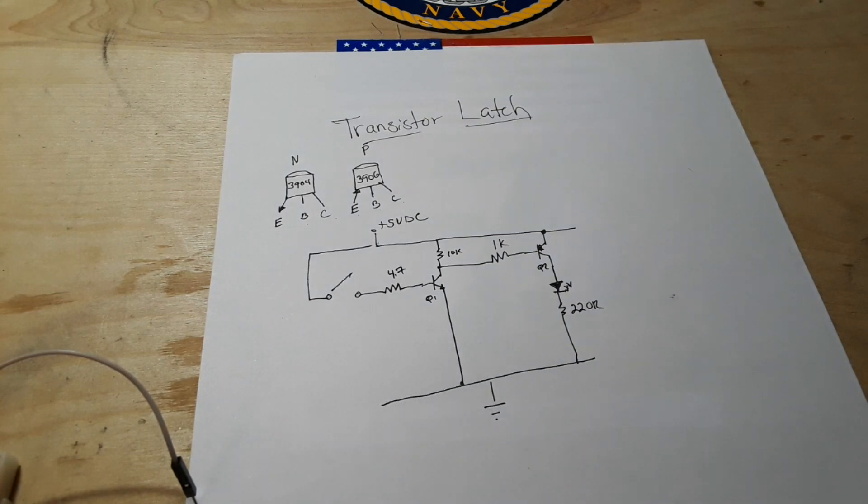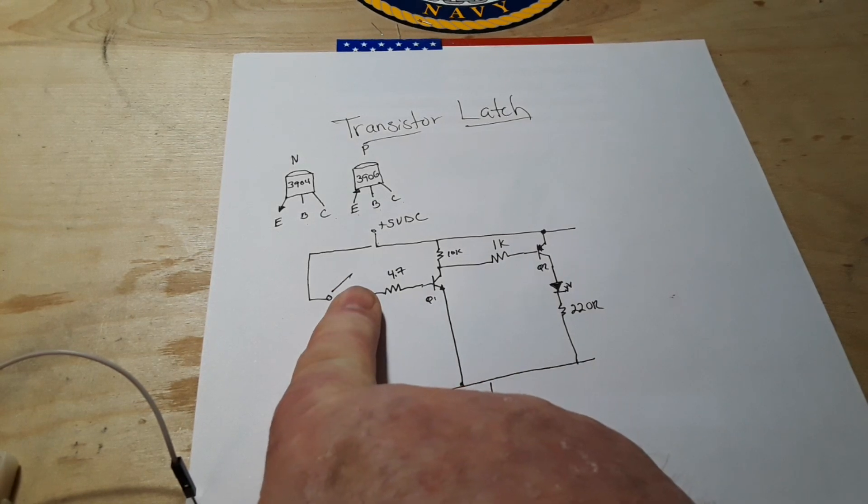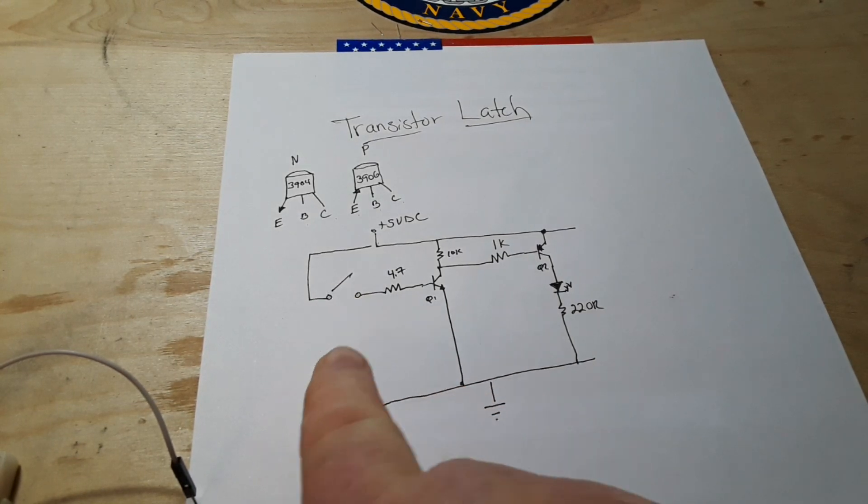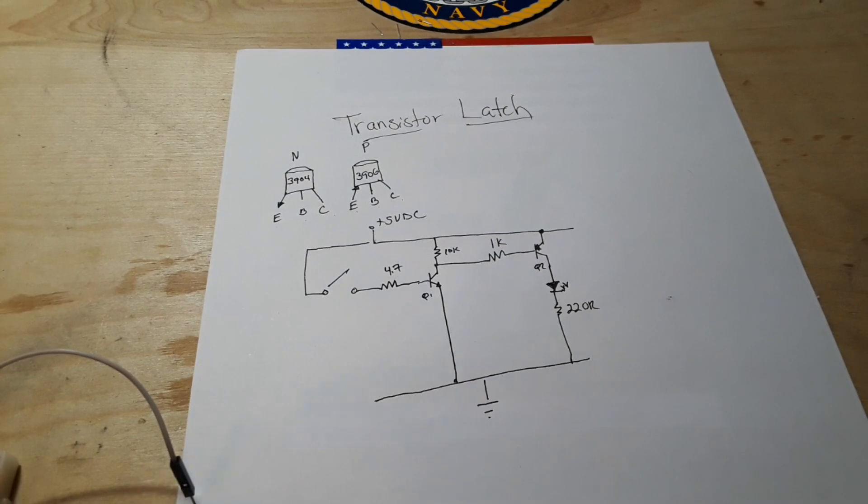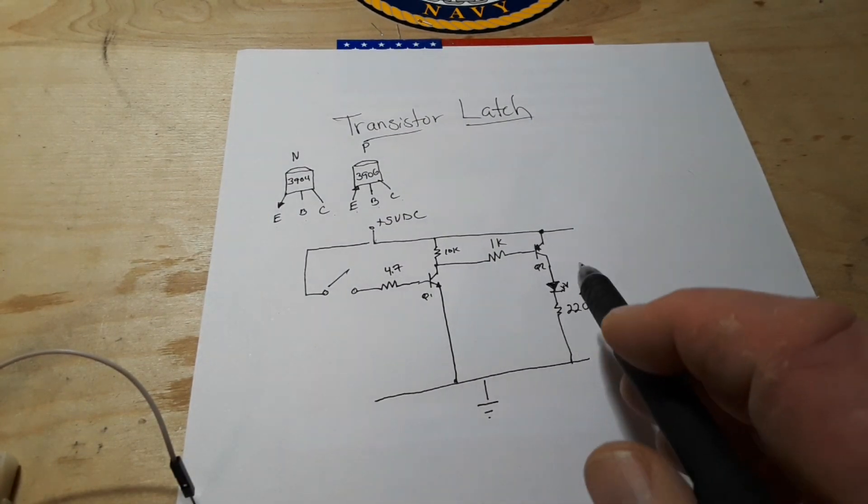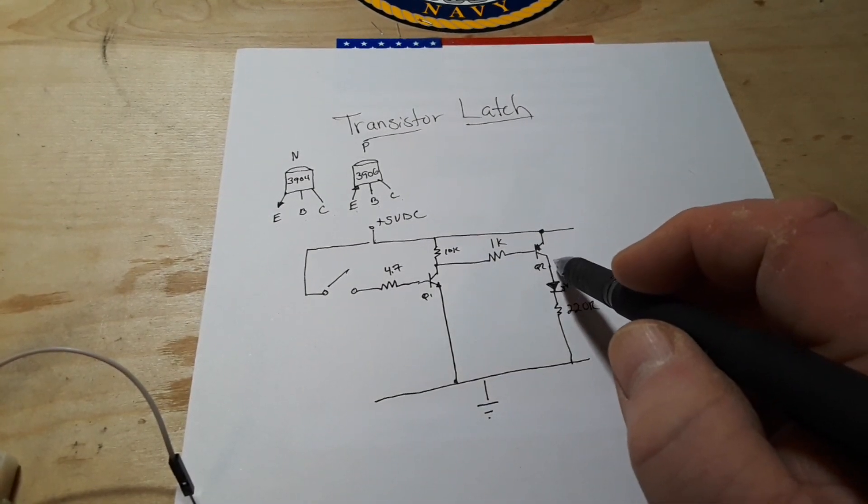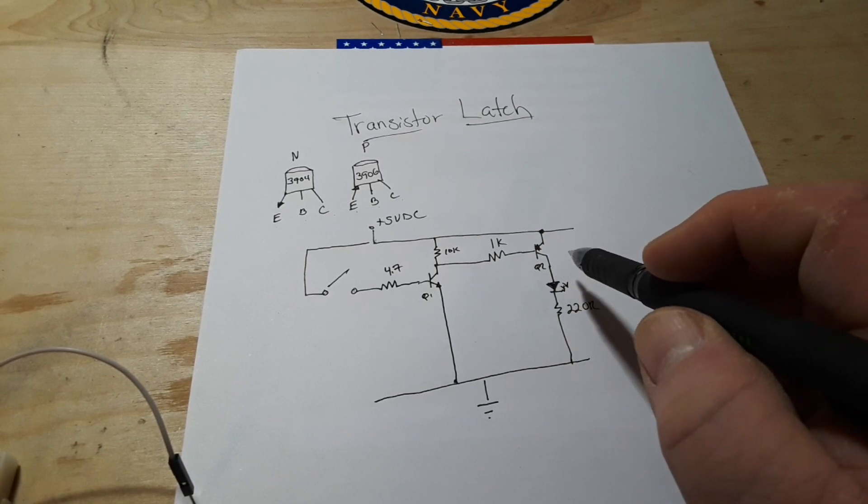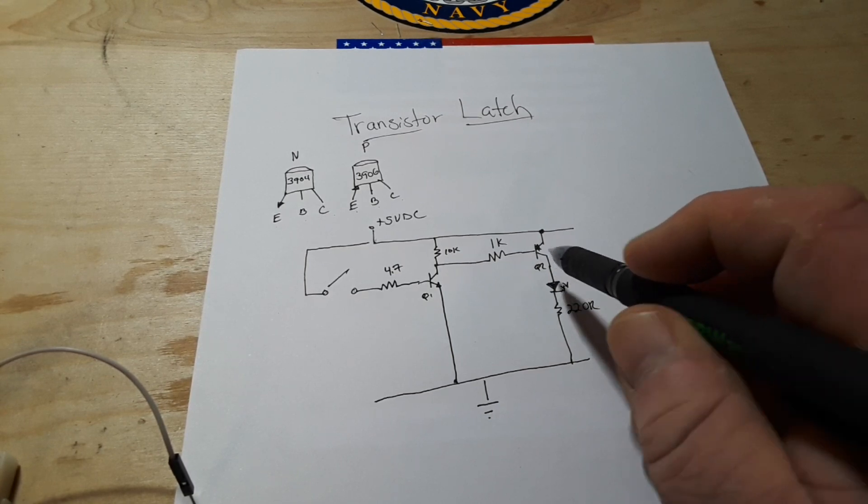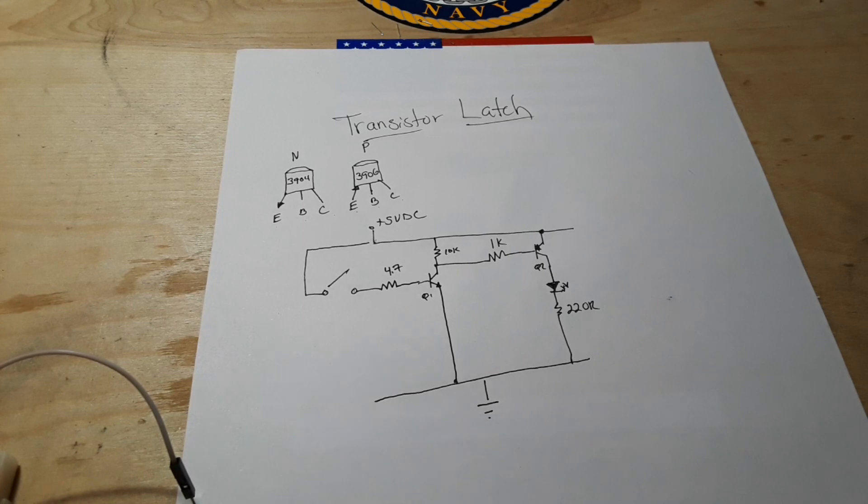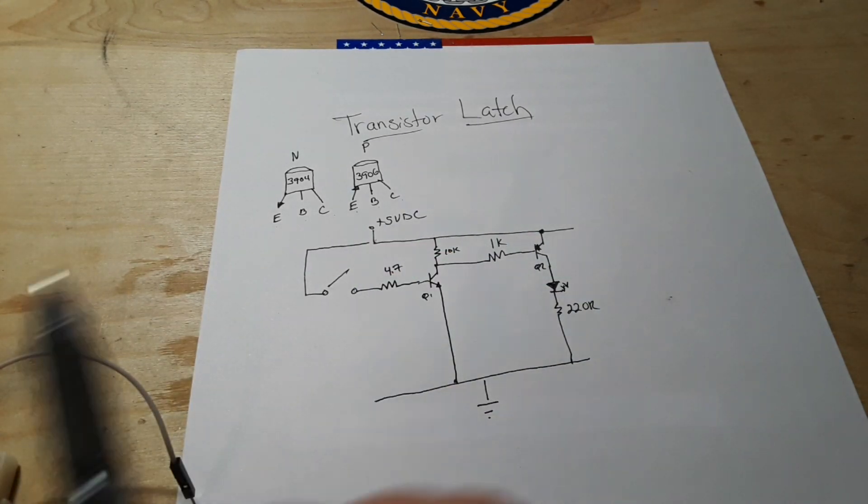So as it stands now what's going to happen is when you close this switch Q1 is going to start flowing and it's going to ground the emitter of Q2 which is going to allow it to flow. But as soon as you let go of that switch it's going to go off.